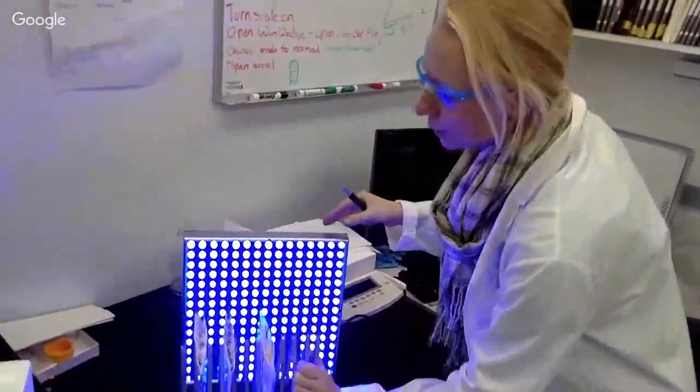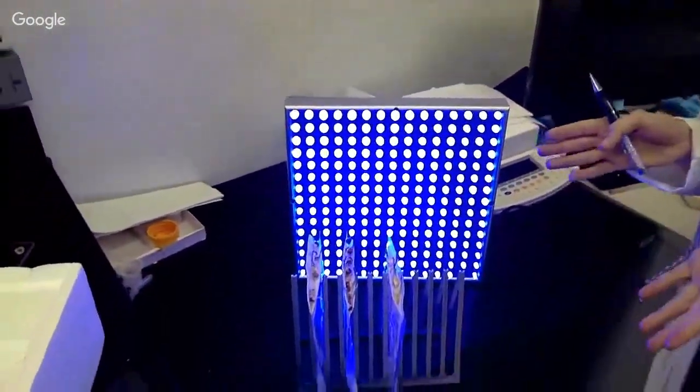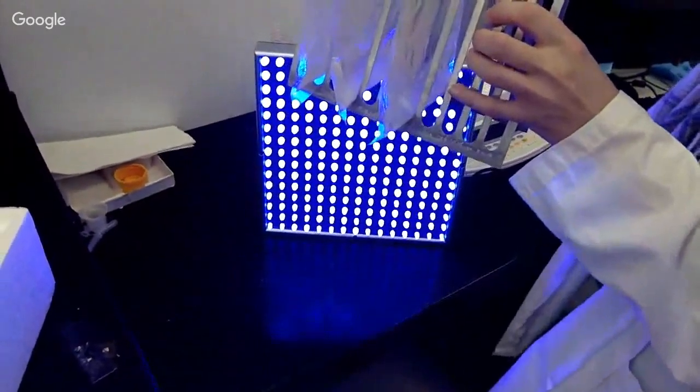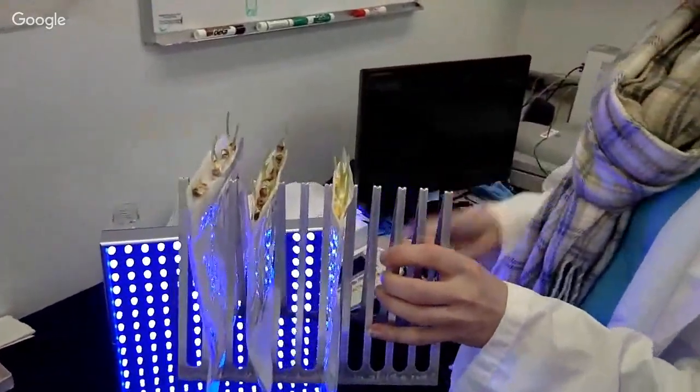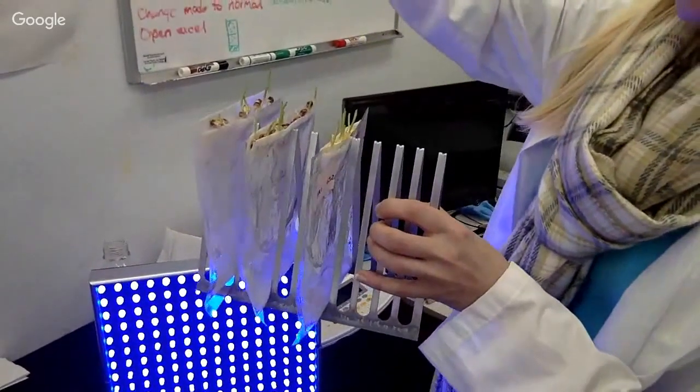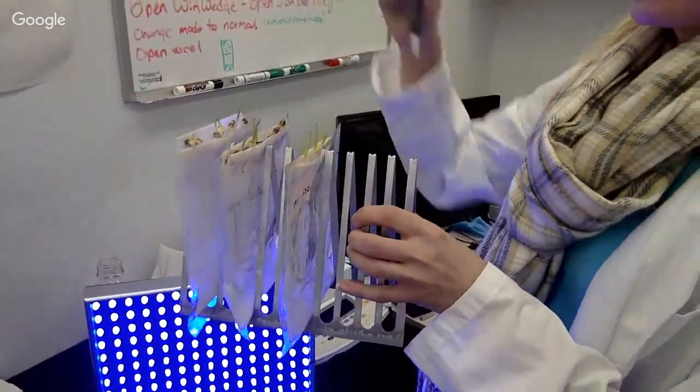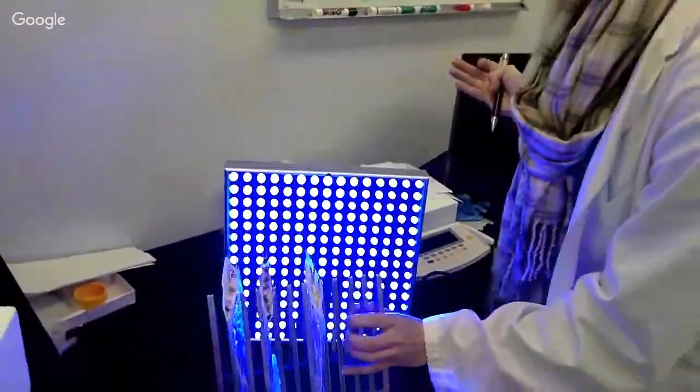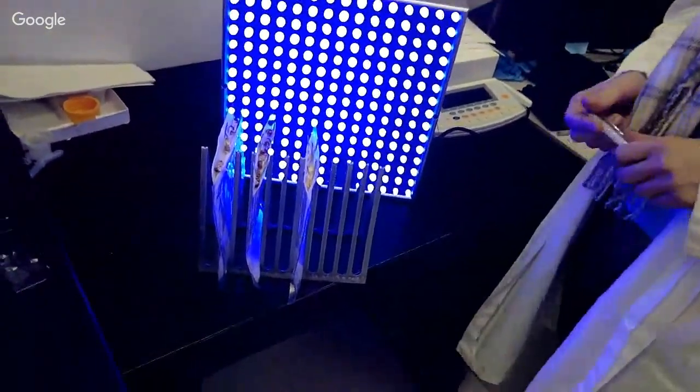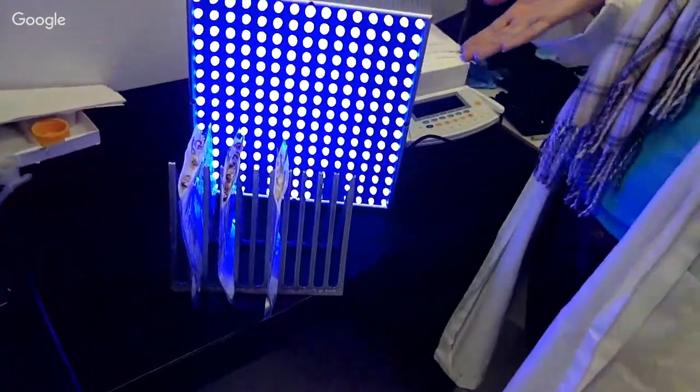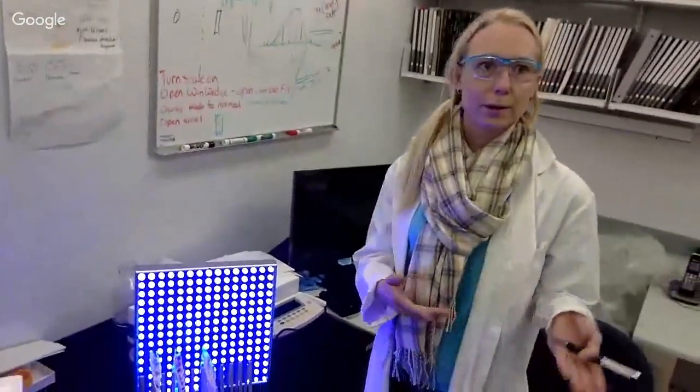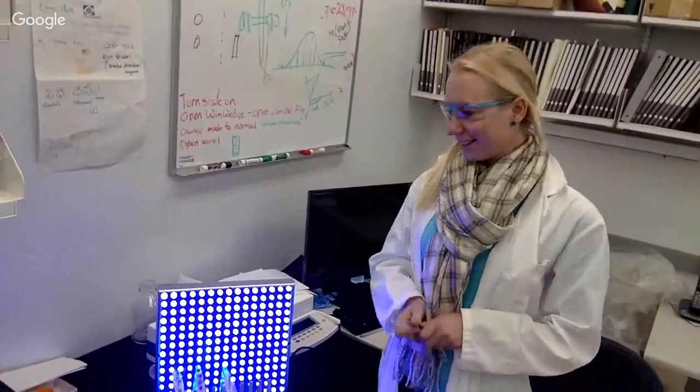They're six days old and the experiment is that you put blue light on one side. Usually it's in the dark, I'm just demonstrating it here. The shoot is showing a curvature towards the blue light. This is because of a plant hormone, auxin. Auxin is moving to the other side where there's no light, and this leads to an extension of the cells. That's why the seedlings are growing towards the blue light. I have here different mutant lines and what I want to see is if there's a difference between different maize lines, if some of them are showing different curvature after a few hours.